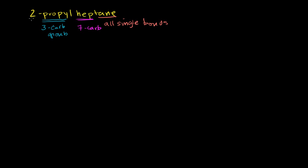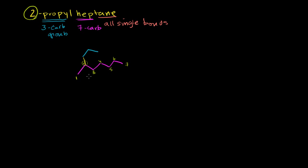So let me draw the heptane chain — 7 carbons, numbered 1 through 7. On the second carbon, we attach a propyl group — a 3-carbon group. So that is what 2-propylheptane looks like.